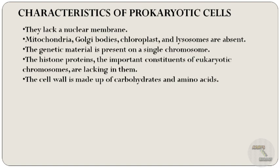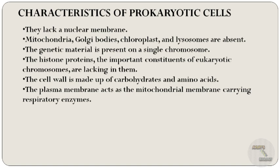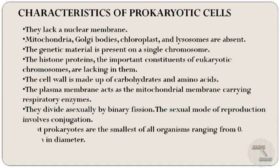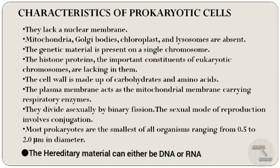The cell wall is made up of carbohydrates and amino acids. The plasma membrane of prokaryotes acts as the mitochondrial membrane, carrying respiratory enzymes. Prokaryotes divide asexually by binary fission, and the sexual mode of reproduction involves conjugation. Most prokaryotes are the smallest of all organisms, ranging from 0.5 to 2 micrometers in diameter, and the hereditary material can either be DNA or RNA.